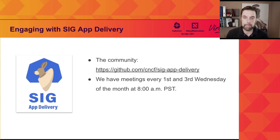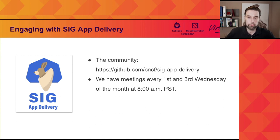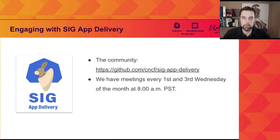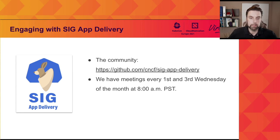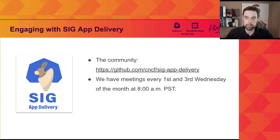That's it from the SIG App Delivery trends — what we're starting to see across projects. We hope there's something interesting for all of you, whether it validates things you're already doing or planning to do. Feel free to engage with SIG App Delivery directly: you can find us on our GitHub page or on the CNCF Slack. There are also meetings every two weeks — every first and third Wednesday at 8 a.m. Pacific time. Feel free to reach out, ask any questions, or engage with the wider app delivery community within the CNCF. That's it for today and thanks for your time.